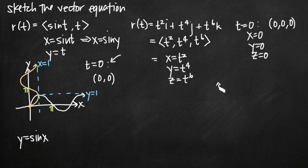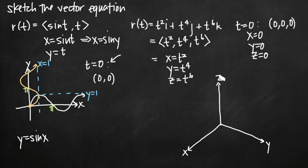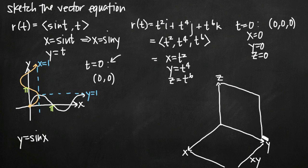Let's start sketching. I'll draw a three-dimensional coordinate system following the right-hand rule with x, y, and z axes. I'll also draw in the coordinate planes: the x,y coordinate plane, the y,z coordinate plane defined by the y and z axes, and the x,z coordinate plane defined by the x and z axes.